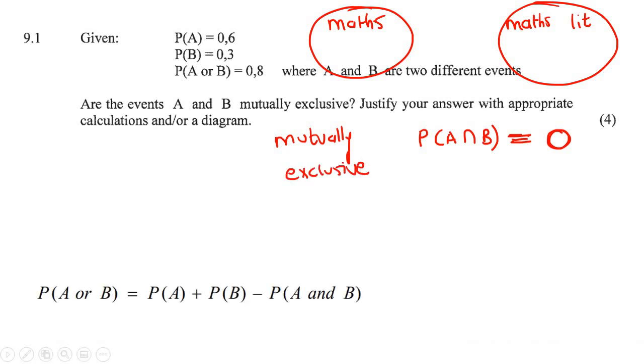So on most formula sheets, you are going to be given a formula like this. This is the basic formula of probability. On some formula sheets, they might have it as A or B. Then they'll have P of A plus P of B minus P of A and B. So that's the and and that's the or. So what we'll do is we'll just use this formula.